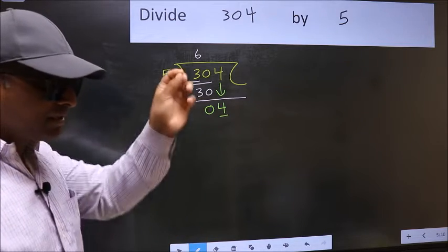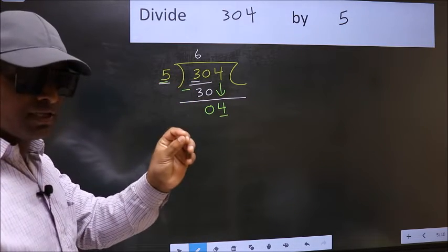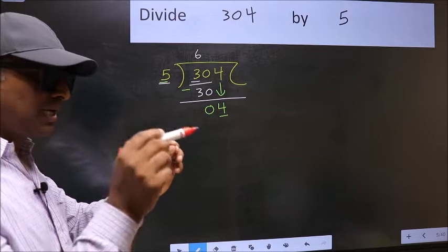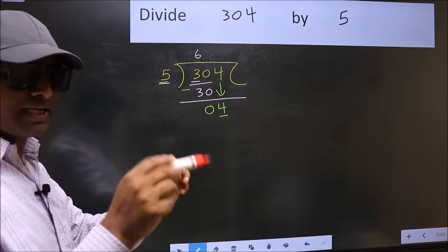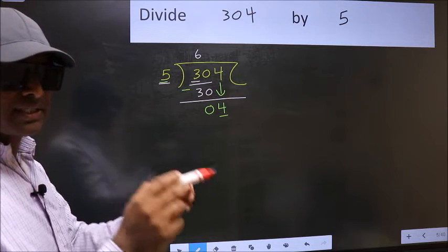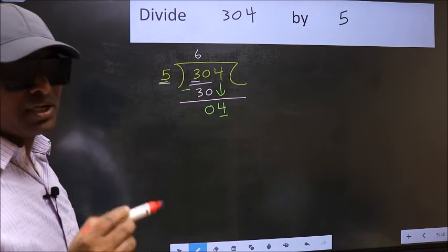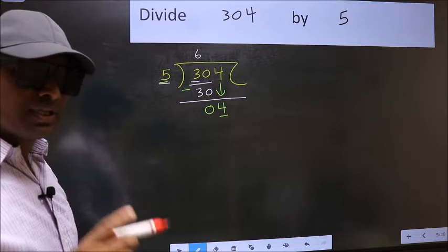I repeat: bringing the number down and also put dot and take 0—bring number down and put dot and take 0—both at the same step, you are not supposed to do.